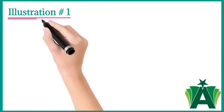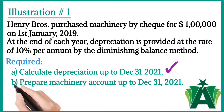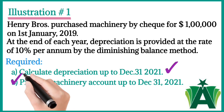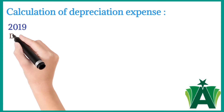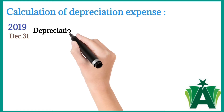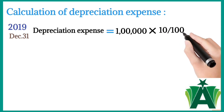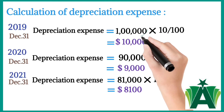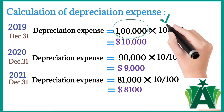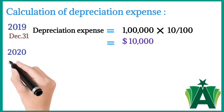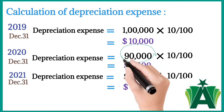In illustration number one, we will learn how to calculate depreciation under the diminishing balance method and how to prepare a machinery account. For 2019, December 31st: depreciation expense equals one lakh multiplied by 10 divided by 100, giving a depreciation amount of 10,000. The opening balance of machinery is one lakh dollars and the rate of depreciation is 10%.